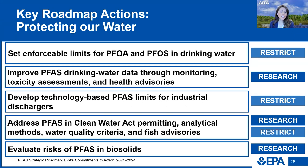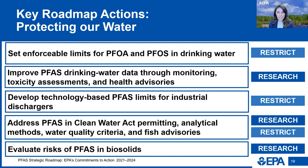In June 2022, EPA released four health advisories: interim health advisories for PFOA and PFOS, and final health advisories for PFBS and GenX chemicals. Under the Clean Water Act, EPA is working to develop national technology-based discharge limits for industries that use PFAS through our Effluent Limitations Guidelines Program. In January 2023, EPA released its final Effluent Limitations Guidelines Plan 15, which outlines key steps towards addressing PFAS discharges across a range of industrial categories.